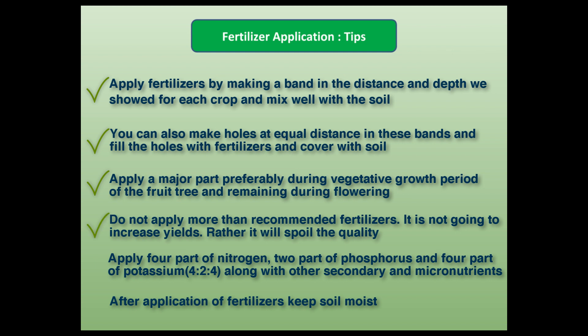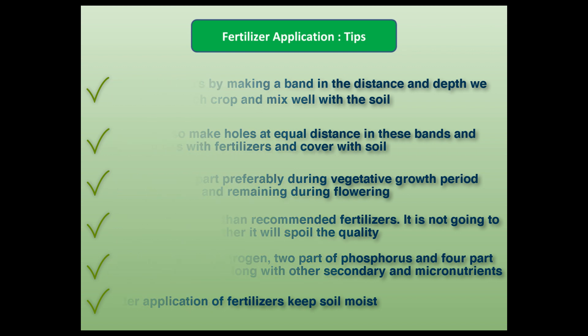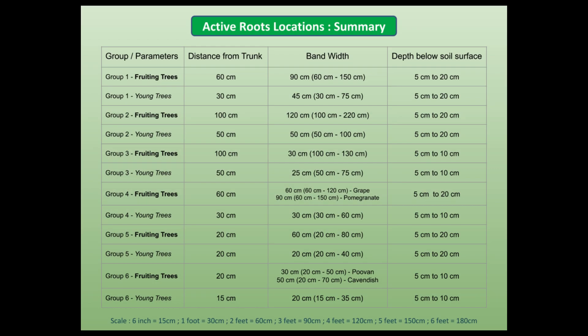Do not apply more than the recommended amount of fertilizers — it will not increase yields but will rather spoil both quality and yield. Apply four parts nitrogen, two parts phosphorus, and four parts potassium along with other micronutrients. After application, keep the soil moist so that the plants will be able to absorb the nutrients well. We hope this video helps farmers growing fruit crops get the complete benefit of fertilizers applied.